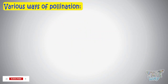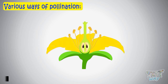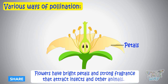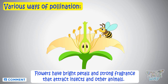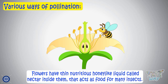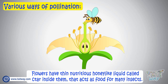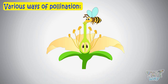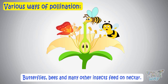Now let's see how pollination occurs, or how pollens reach the stigma. Flowers have bright petals and a strong fragrance that attract insects and other animals. Flowers also have thin, nutritious, honey-like liquids called nectar inside them, which act as food for many insects.